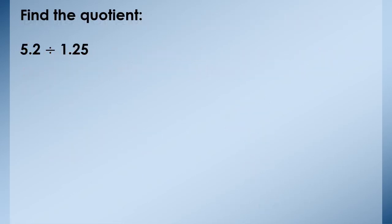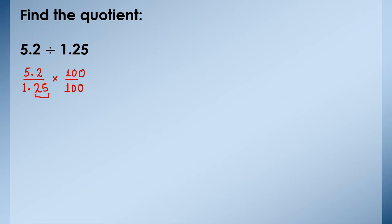Look at the first question here. It is given 5.2 divided by 1.25. So write it as 5.2 upon 1.25. Now as you can see there are two places after decimal in the divisor, which means we have to multiply the denominator by 100. Now if we are multiplying the denominator by 100, we have to multiply the numerator also by 100. In the denominator this decimal will shift two places to the right side and it will be eliminated. So we will get 125 in the denominator.